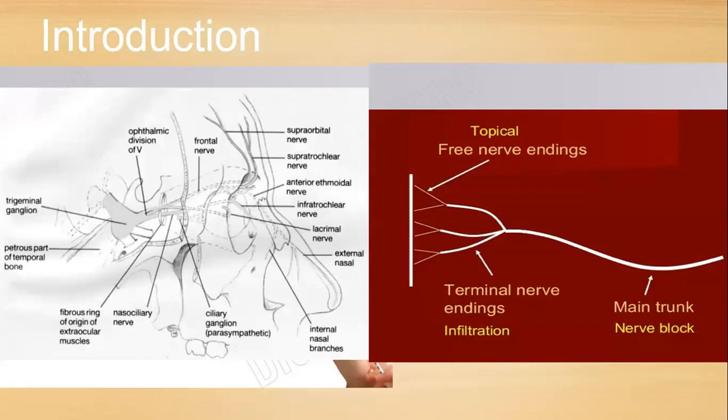In the introduction part, you can see two pictures on the slide. In the red one, there are topical free nerve endings. These free nerve endings join to form the terminal nerve endings where we can give the infiltration, and these terminal nerve endings join to form the main trunk, which is known as the nerve block. Whenever we spray the local anesthetic solution, we spray it on the free nerve endings.